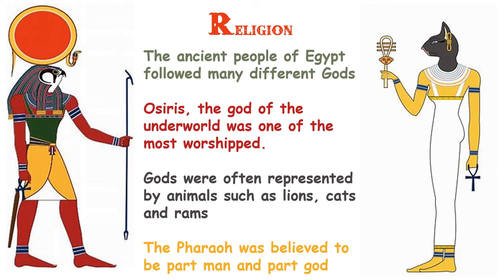Moving on to religion — the early Egyptians were polytheistic, which means they believed in more than one god. In fact, they believed in over 2,000 gods. Osiris is one of the main gods most worshiped — the god of the underworld. If you look at pictures of Egyptian gods, many times they're half human and half animal, often represented by animals such as lions, cats, and rams. You may have also seen that very famous cat statue.